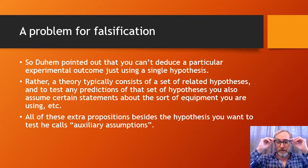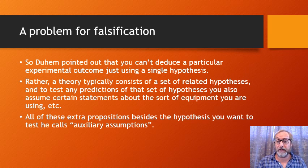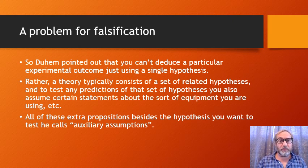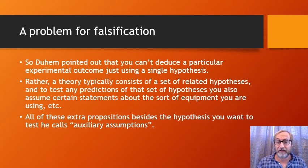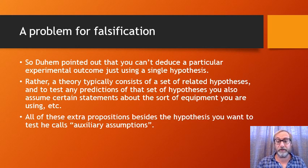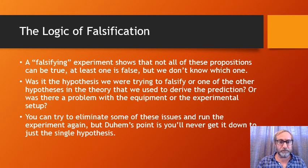This is what Duhem points out as a problem for falsificationism: you can always try to save your theory when someone runs a falsifying experiment, by rejecting one of the auxiliary assumptions instead. You can't deduce a particular experimental outcome from a single hypothesis alone. Rather, a theory consists of a set of related hypotheses, and what you're testing is predictions of that whole set, plus all the auxiliary assumptions about your instruments, your senses, and so on.